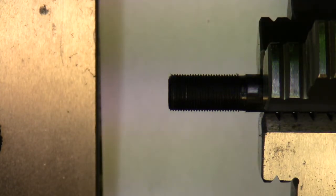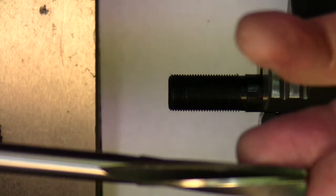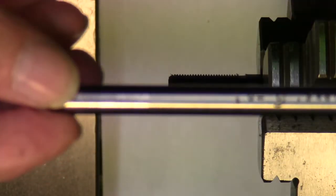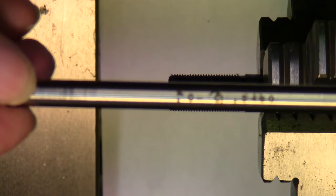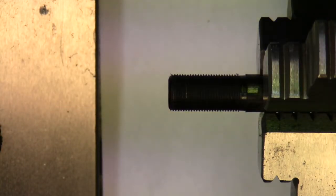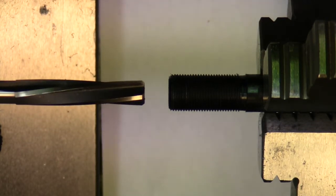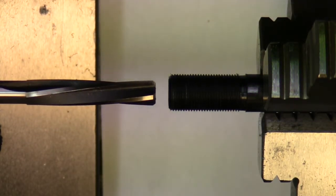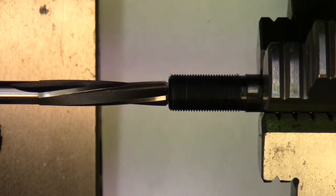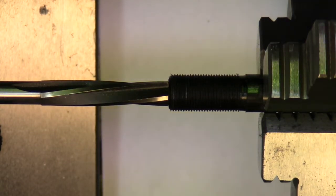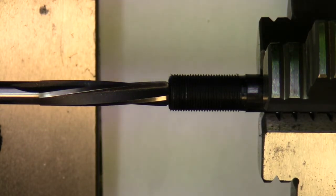Now I'm going to ream it to 0.349. I got a 0.349 reamer here, and I'm going to do the same thing I just did with the drill. Get it up here - that seems to help. There it is, right at the edge. Lock down my tailstock, and I'm going to do twelve turns.